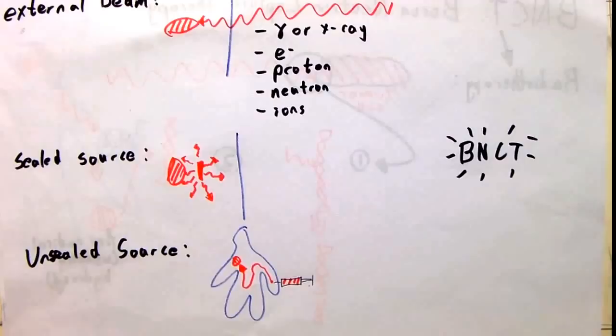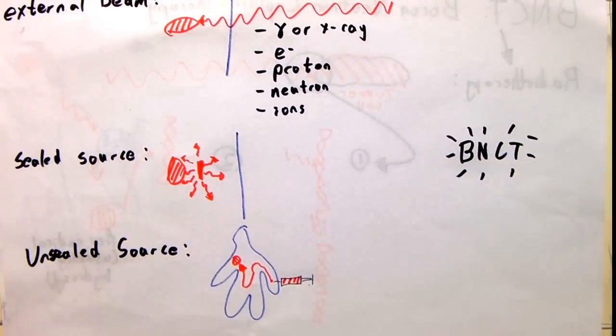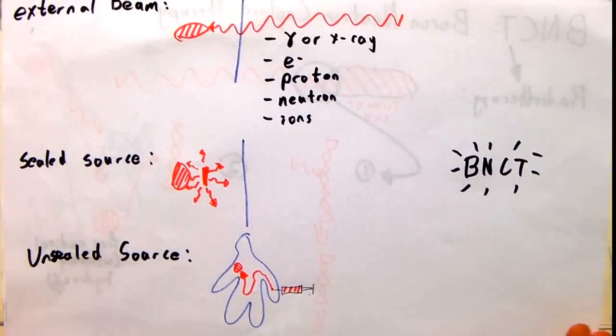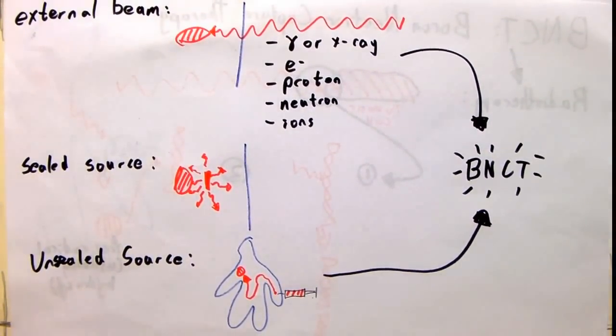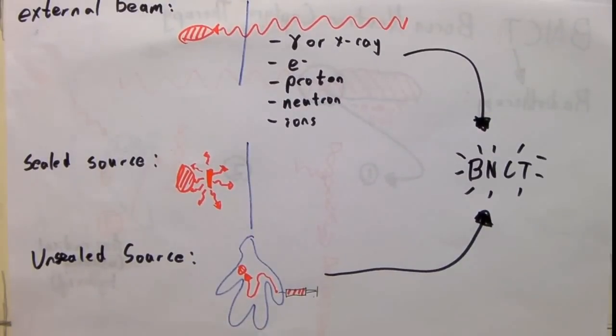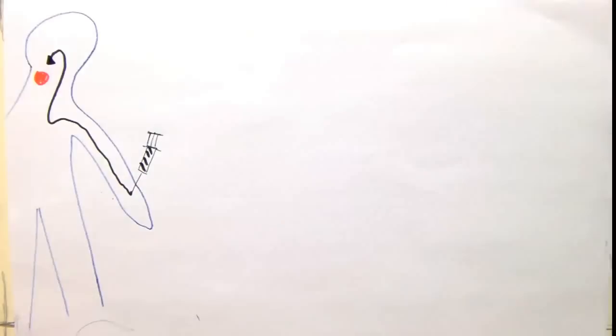BNCT is a distinct type of radiotherapy, different from the three main types listed. It can be thought of as a combination of external beam and unsealed source radiotherapy, amplifying the advantages while reducing the disadvantages of the two types.